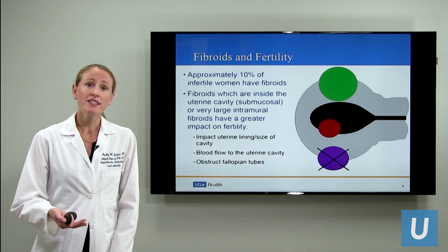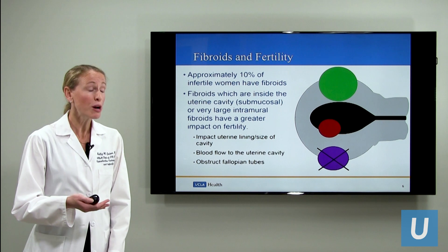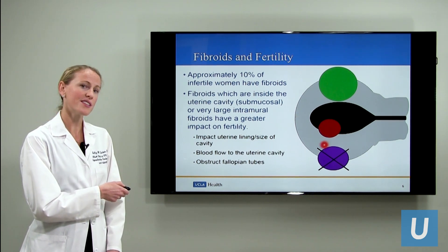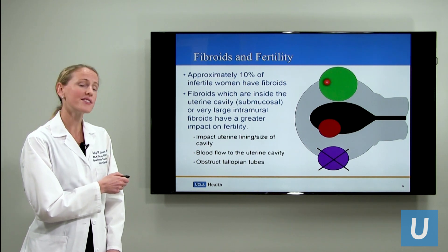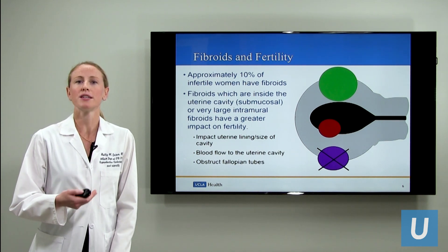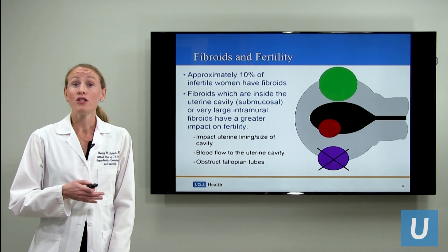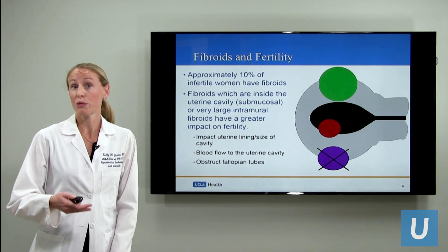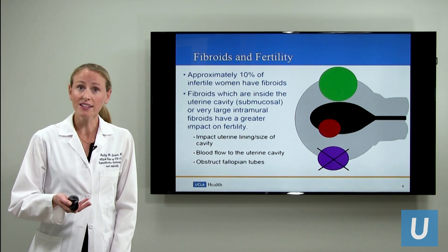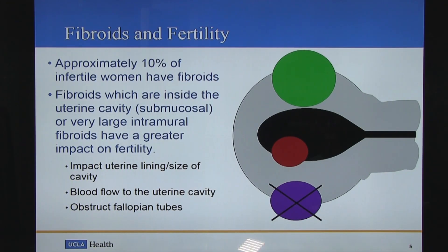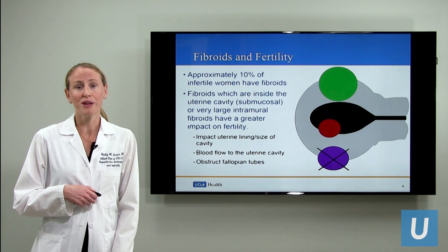Approximately 10% of infertile women have fibroids. Fibroids which are inside the cavity — those submucosal fibroids — and large intramural fibroids tend to pose the greatest impact with respect to fertility. How? By impacting the uterine cavity size where pregnancy needs to develop, or altering the uterine lining, by altering blood flow to the uterus and the cavity, and finally, if a fibroid is large enough, it could potentially obstruct the fallopian tubes — importantly, where egg and sperm meet.